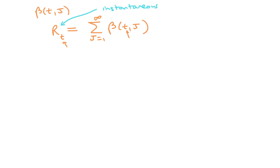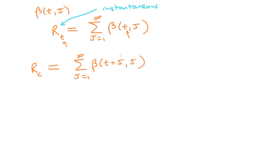The second quantity is the case reproduction number, denoted R_c. This is the average number of people a person will infect throughout their infection, accounting for potential changes in future transmission. We compute it as the sum from tau equals one to infinity of beta(t + tau, tau), allowing the transmission rate to change over the course of the infection by adding tau to the calendar time argument.